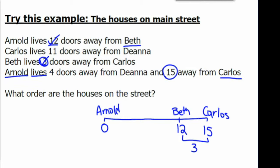Next, let's look at Deanna. Arnold lives 4 doors away from Deanna. So let's place Deanna at number 4. And we will check. Is Deanna now 11 doors away from Carlos. 4 plus 11 is 15. So we're done.